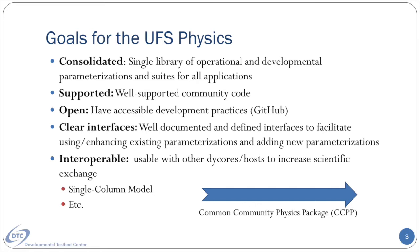Second, this library should be well supported and be accessible to the weather and climate community. Third, the library should be open and follow community-oriented development practices, such as utilizing Git for version control and GitHub for sharing code and coordinating development. Fourth, each physics scheme should have a clear, well-defined interface that is also well documented, facilitating using and enhancing existing parameterizations, as well as providing a template for new parameterizations to follow. Fifth, physics schemes should ideally be interoperable in the sense that they should be usable across many models. This should ultimately lower barriers to scientific exchange across organizations, much like standardization of mechanical parts, electric building codes, or countless other examples in modern society.